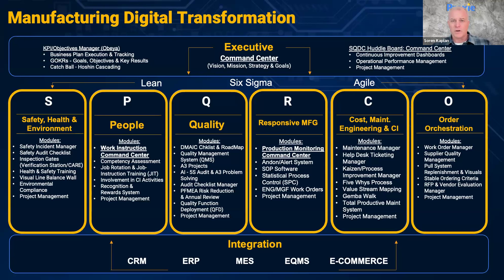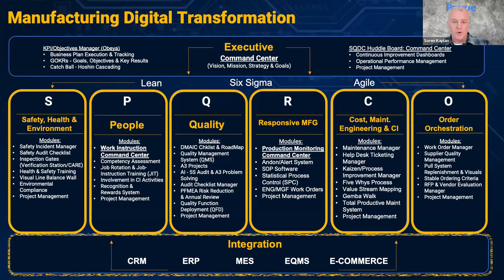And then finally, order orchestration. If you're a manufacturing organization, you want to know what orders are coming in so you can put out the products that will satisfy those orders. All of that order supply — order management, supplier quality management, and RFP vendor evaluation — those are areas where people have already digitized to a certain extent, but you want to continue to digitize those as well.